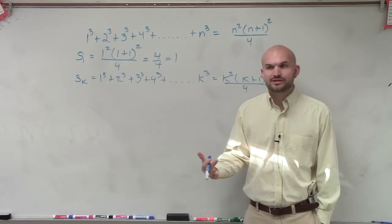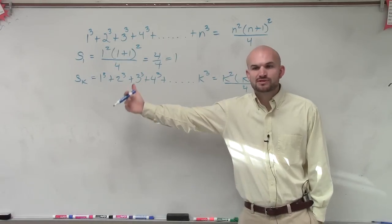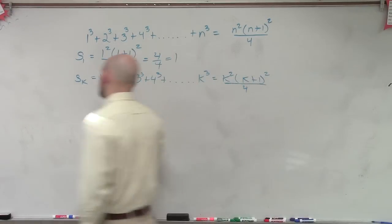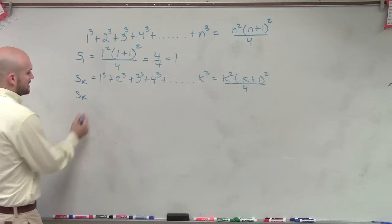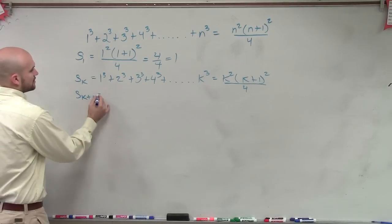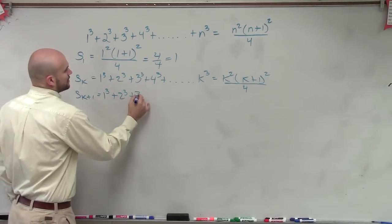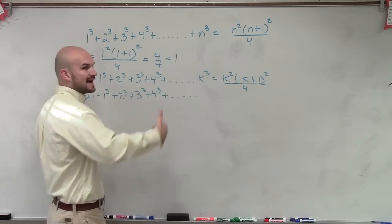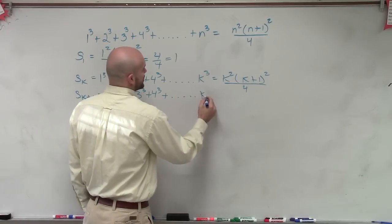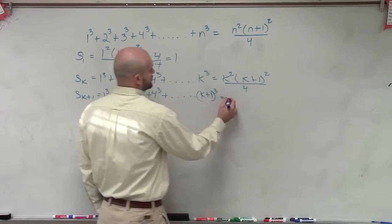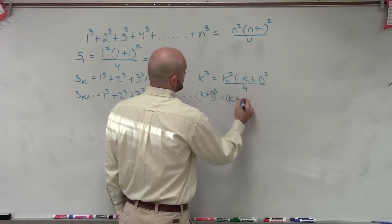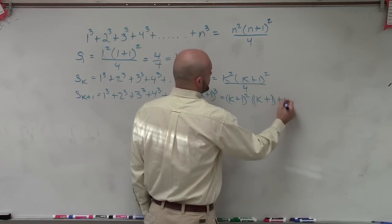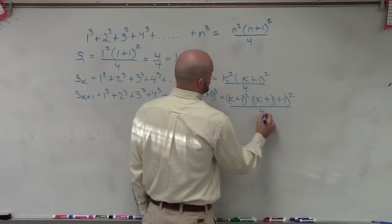Then what we're trying to do with induction is we're trying to not just prove that it works for k, but we want to prove that it works for k+1. So now we're going to figure out what s(k+1) is. Well, that's 1³ + 2³ + 3³ + 4³ + ... + (k+1)³ = (k+1)²(k+1+1)²/4.